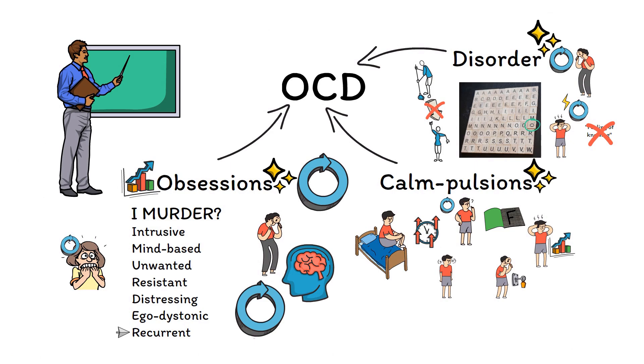Obsessions can be defined using the I-murder mnemonic, while the word compulsions can help you remember that the key purpose of compulsions is to calm obsessions. While OCD is the prototypical disorder that involves this pattern, there are a few others as well that are known as OCD spectrum disorders. We'll cover these in future videos, but for now, just focus on understanding these three elements as well as you can.